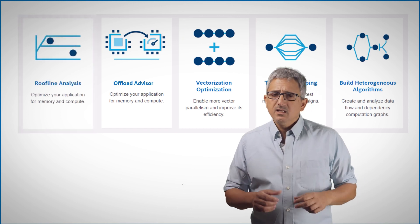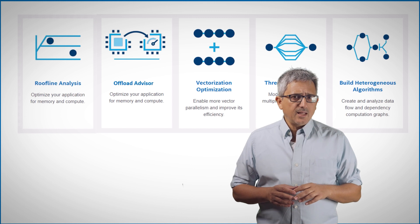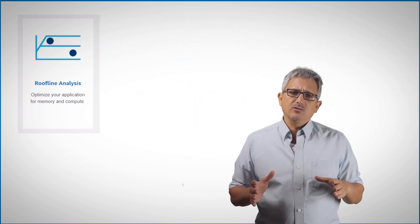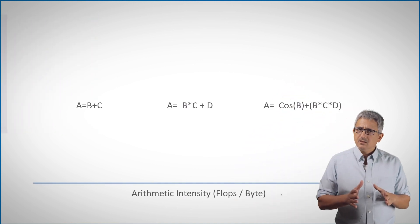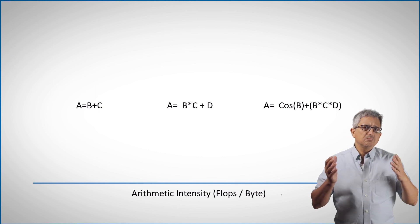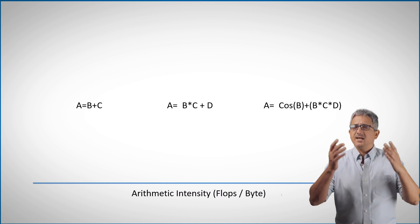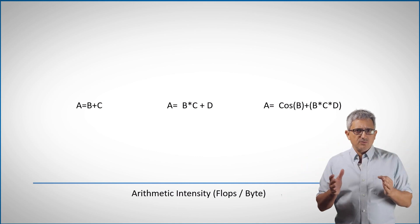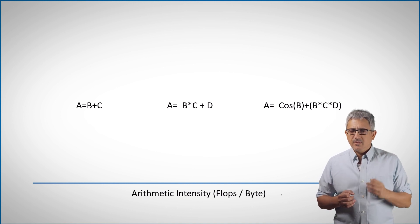And last is the roofline analysis — it's pretty cool and I'd like to show you how it works. Your code has many functions, and each has a different arithmetic intensity. A function that adds B and C into A is less complex and takes fewer operations than calculating the cosine of B and multiplying B by C and D. This is measured by the number of operations per byte of data — the x-axis.